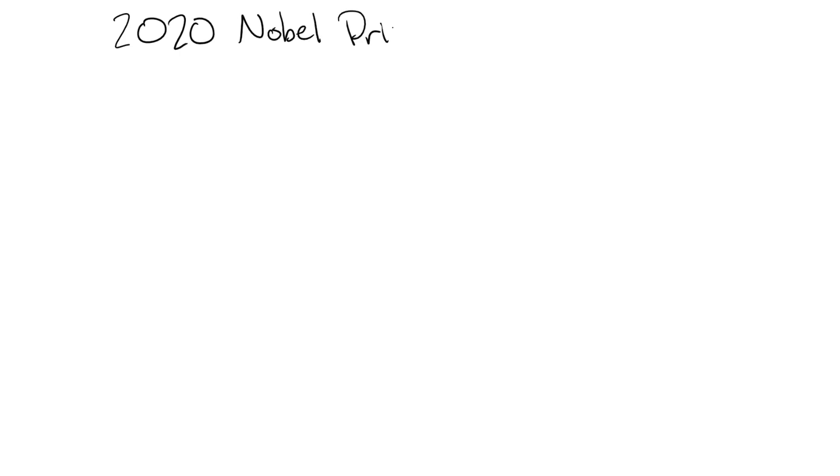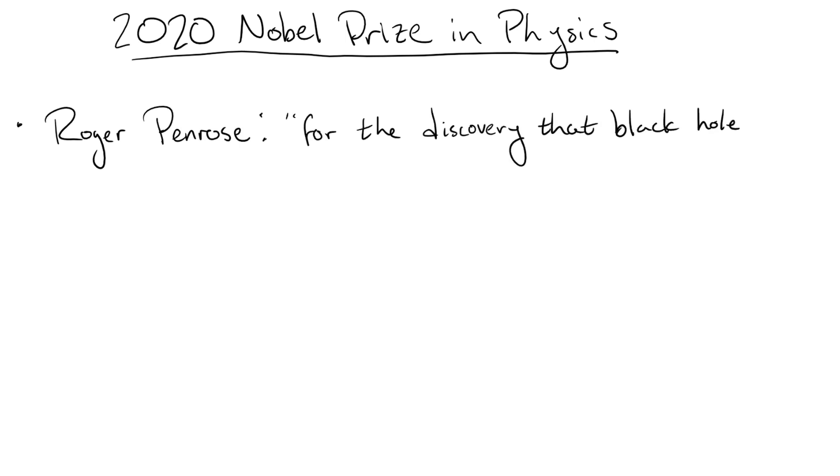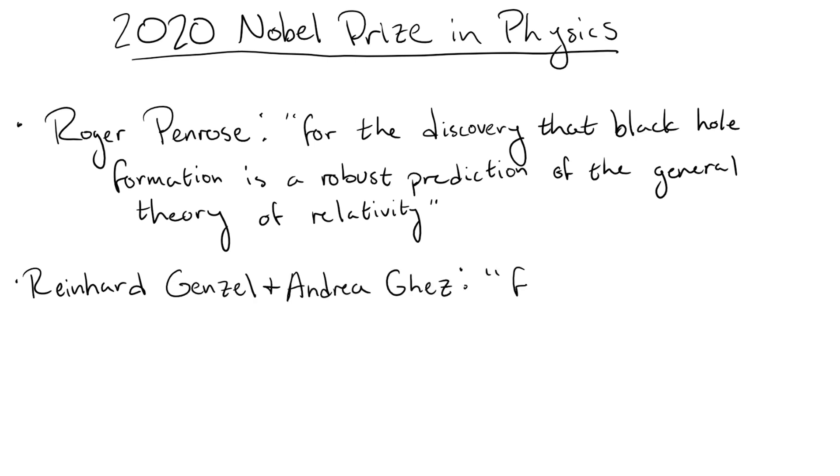This year, the Nobel Prize in Physics went to three physicists for their contributions to our understanding of black holes. Half the prize went to Sir Roger Penrose for showing that black holes are a fundamental prediction of general relativity, while the other half was shared between Drs. Reinhard Genzel and Andrea Ghez for discovering the supermassive black hole at the center of the Milky Way. Both of these discoveries had a huge impact on the way we view black holes.